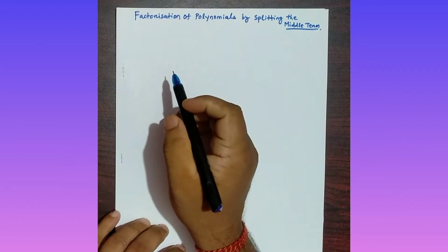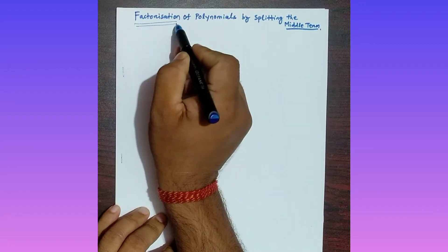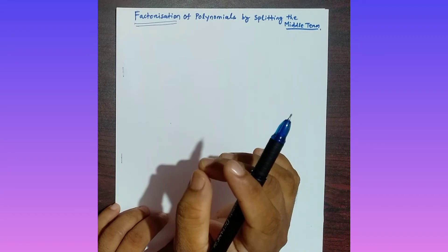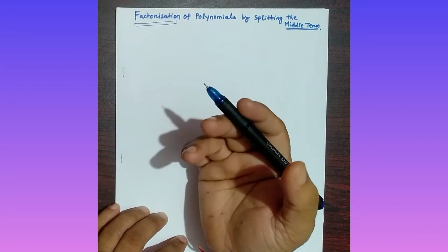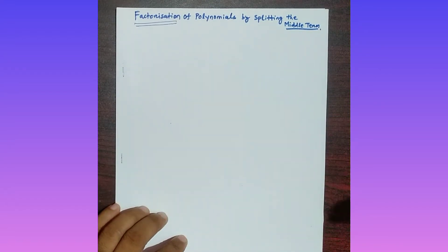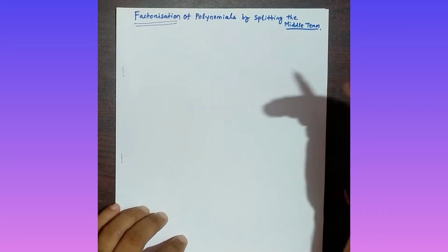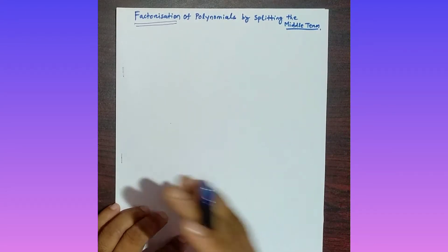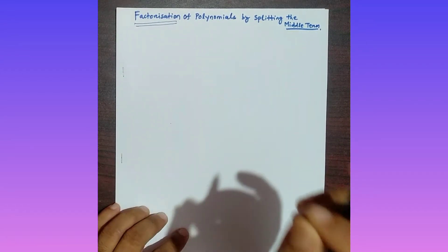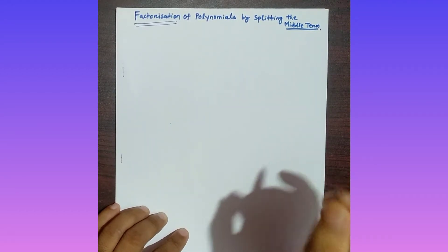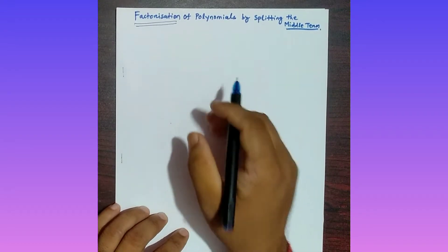Before we begin, you have to know what is the meaning of factorization. The definition of factorization is: one polynomial is given to you, and you have to express that polynomial in such a manner — that is, as a product of polynomials — where each of those polynomials has a degree less than that of the given polynomial.